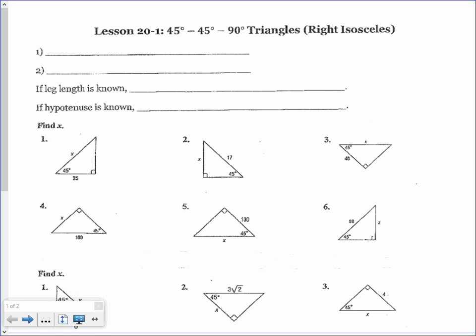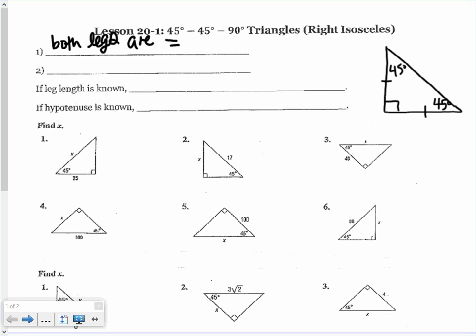We're going to start by looking at a 45-45-90 degree triangle. We'll draw our right angle, and since we know we have a 45 degree angle and another 45 degree angle, we know that these two sides are the same length. Those are your legs, and the first thing we know is that both legs are congruent to each other.